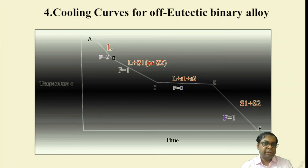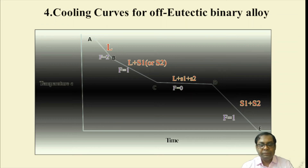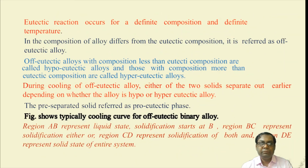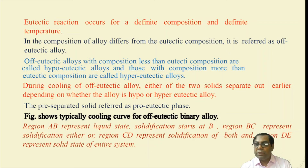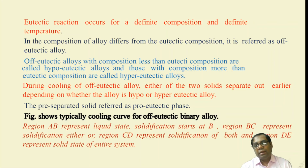The fourth case is the cooling curve of off-eutectic binary alloy. From A to B is pure liquid; B to C is liquid plus either S1 or S2; C to D is an isothermal conversion with L + S1 + S2; and D onwards is S1 + S2. Alloys with composition less than the eutectic composition are called hypoeutectic alloys; those with composition greater are called hypereutectic alloys. Solids that separate before complete solidification are called pro-eutectic solid 1 or pro-eutectic solid 2.